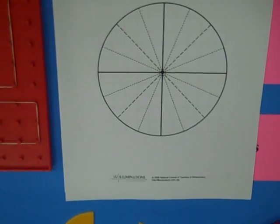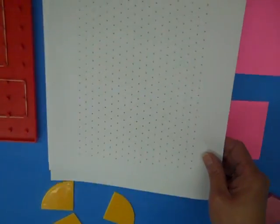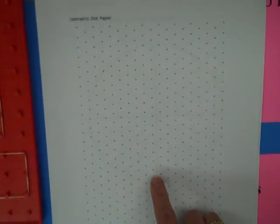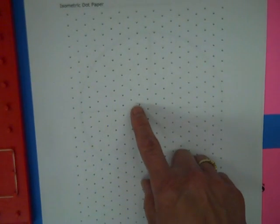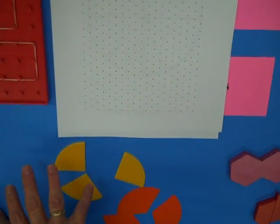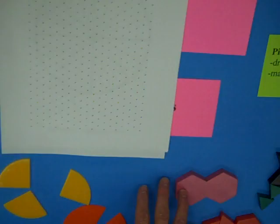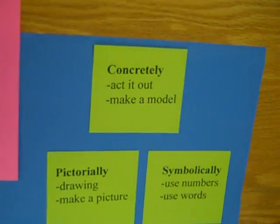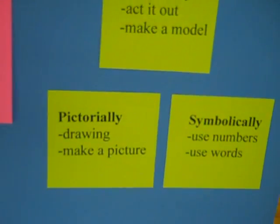And then, our pattern blocks. This is similar to the square dot paper, but these are on an angle. So, you can actually draw your pattern block pieces on it. So, the idea is to push your students from concrete to pictorial. And then, you would like them to label it with numbers or words.